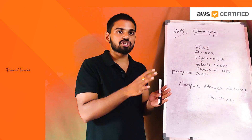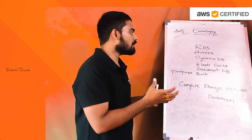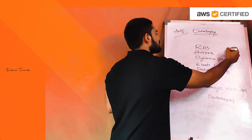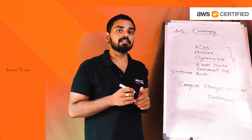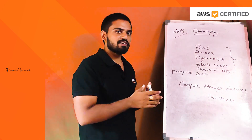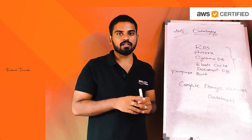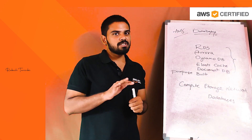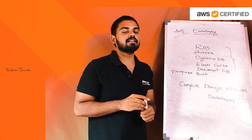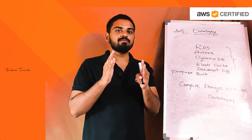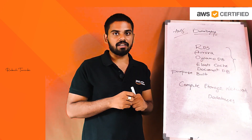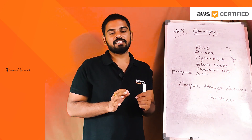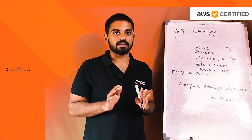We will cover this database series with five different services, going through each concept in detail. In AWS, there are actually around 15 to 20 different services related to databases alone — not compute, not other categories, just database-related services.